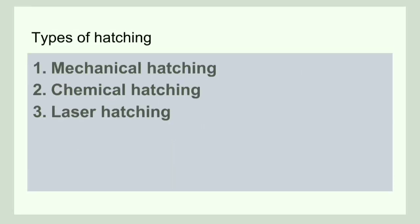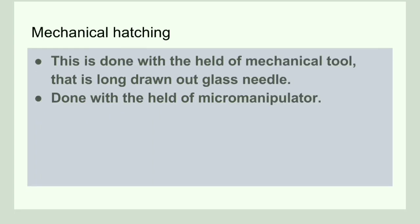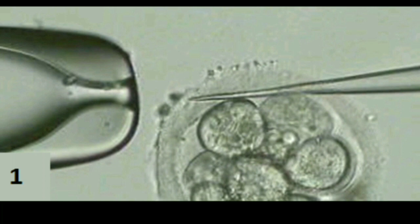There are three types of hatching: mechanical, chemical, and laser hatching. Mechanical hatching is a technique that uses a glass needle to break the zona pellucida and is performed in a micromanipulator. This diagram shows the mechanical hatching technique, where the zona layer is treated prior to embryo transfer using a long, drawn-out glass needle.